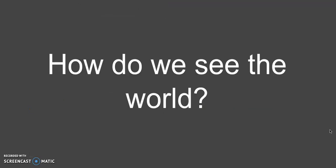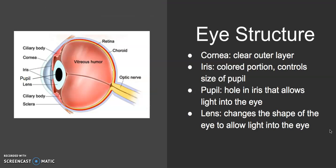So how do we see the world? With our eyes. We're going to talk about seven different pieces of the eye structure, going from the outside in. Starting with the cornea, which is the clear outer layer that protects your eye. It works together with other parts of your body — like your eyebrows and eyelashes — to keep things out of your eye.